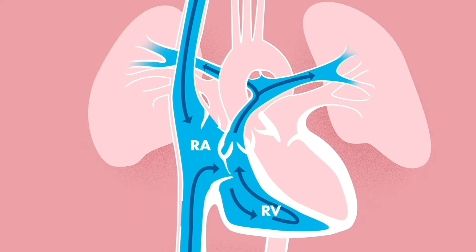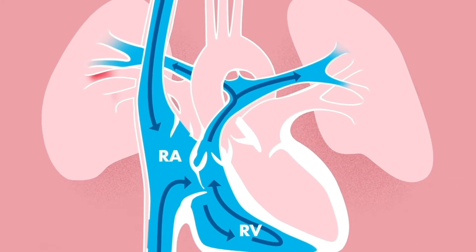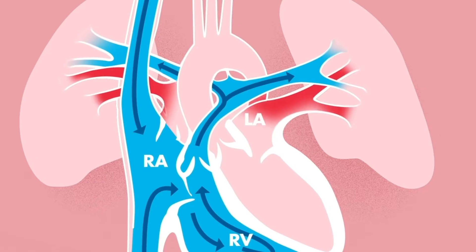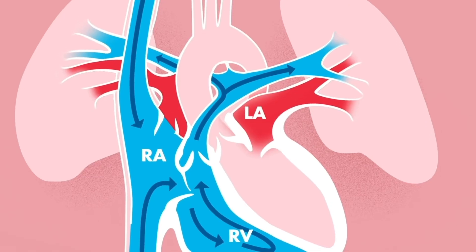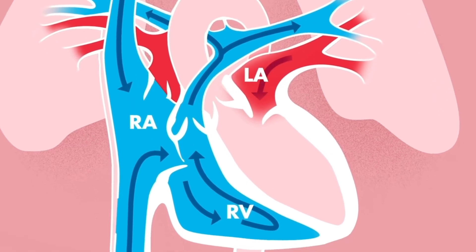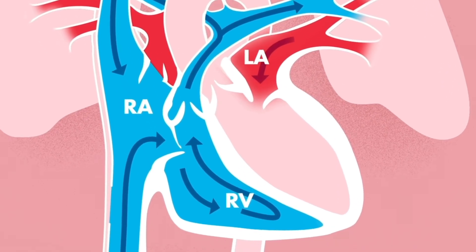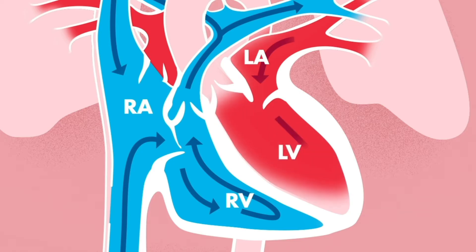Blood comes back to the heart from the lungs through the pulmonary veins. Like the right side of the heart, the blood passes through valves and chambers on the left side. From the top left chamber called the left atrium, the blood goes through the mitral valve into the bottom left chamber called the left ventricle.